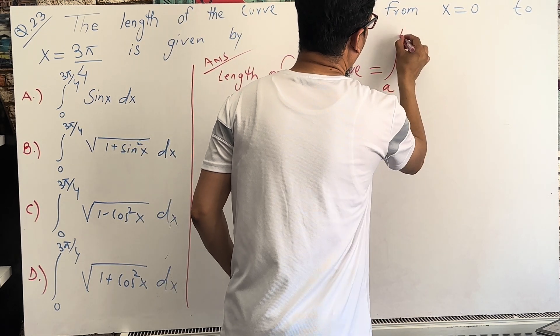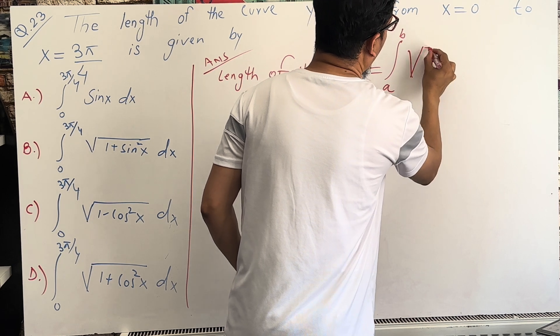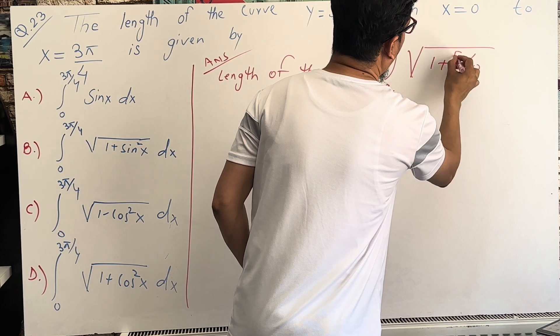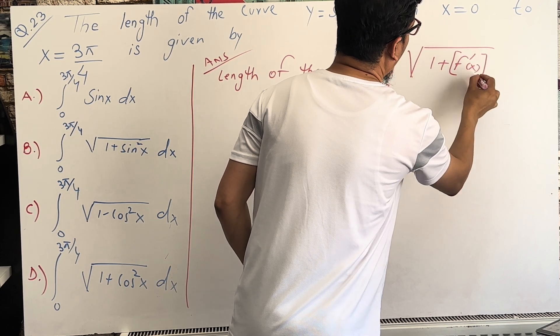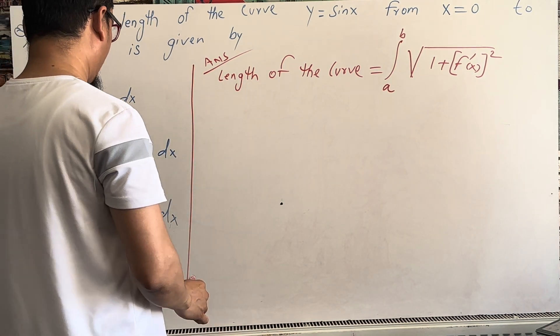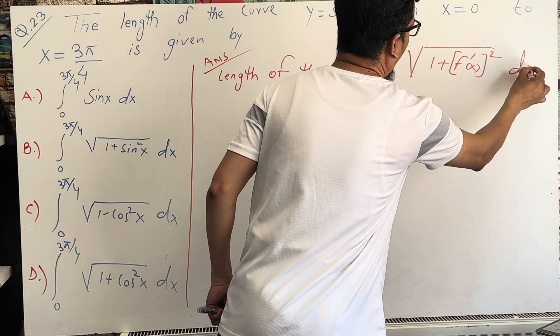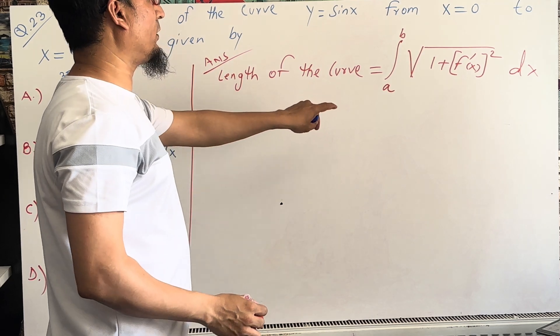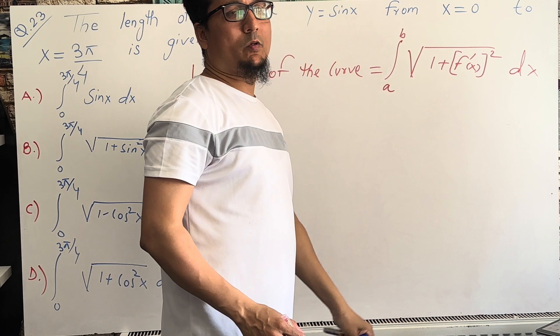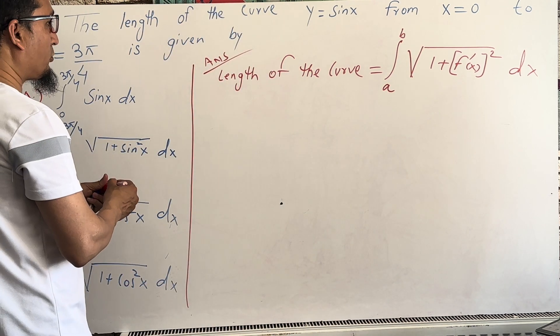From a to b, the integral of the square root of 1 plus f prime of x squared, dx. This is the formula. The length of the curve - the function is given, you just find out the derivative and write down the lower limit, upper limit. That is your answer.